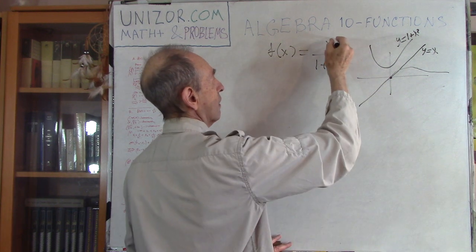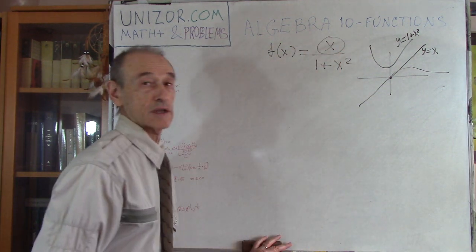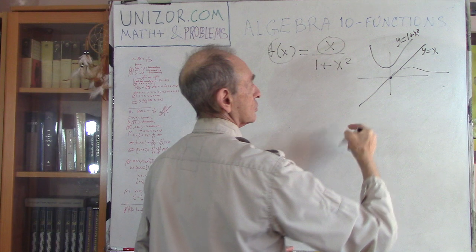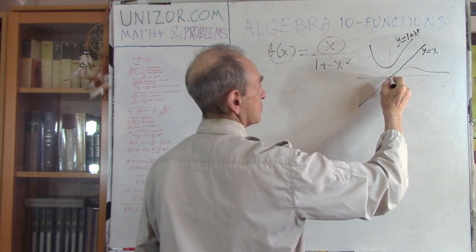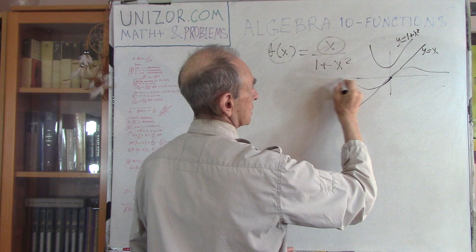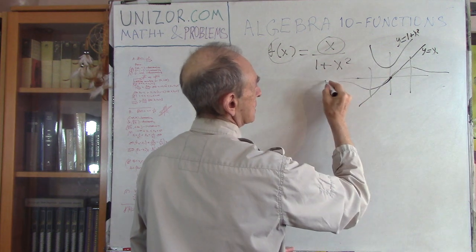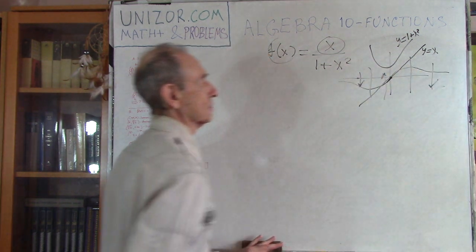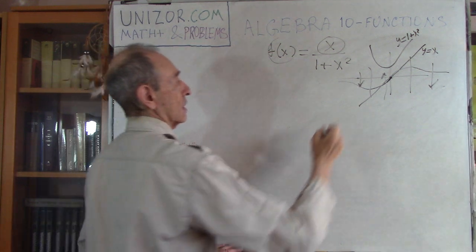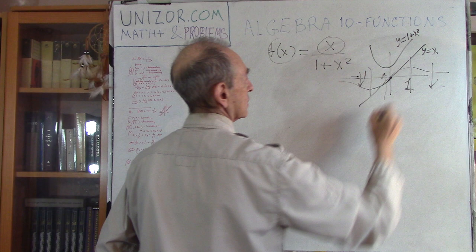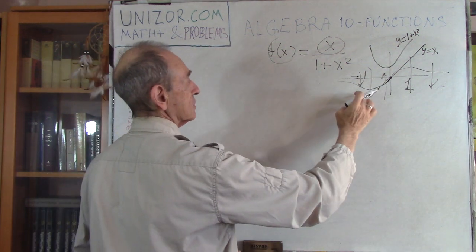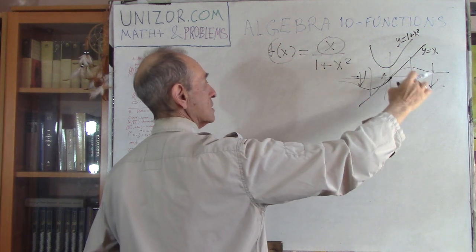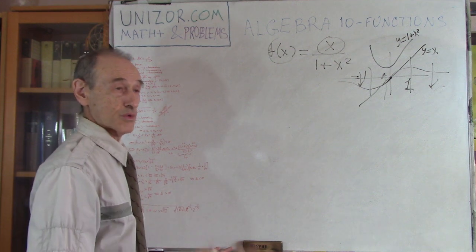The function is odd, which means if you change the sign of x, it changes the sign of the function. Odd functions are symmetrical with respect to rotation around the origin of coordinates. So it looks like this is where function is decreasing, this is where it's increasing, and this is decreasing again. What we have to prove is that from minus infinity to minus 1 the function is decreasing, then from minus 1 to 1 it's increasing, and then decreasing again.